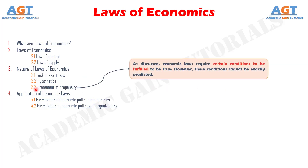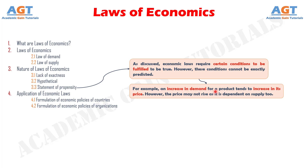The third nature of laws of economics is the statement of propensity. As discussed, economic laws require certain conditions to be fulfilled to be true. However, these conditions cannot be exactly predicted. For example, an increase in demand for a product tends to increase its price. However, the price may not rise as it is dependent on supply too.